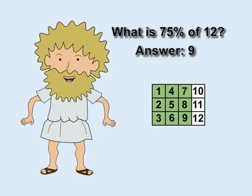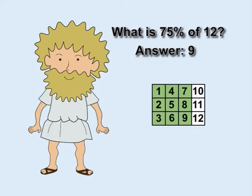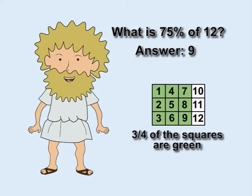But 9 is also three quarters of 12. So 75% is really just another way of saying three quarters.